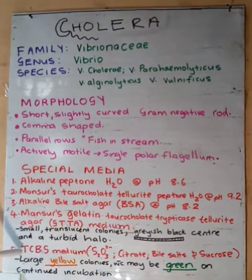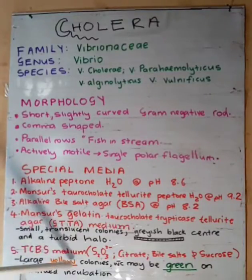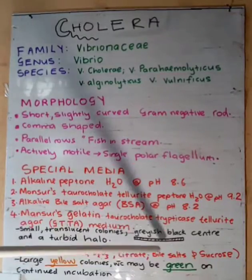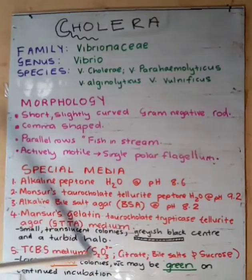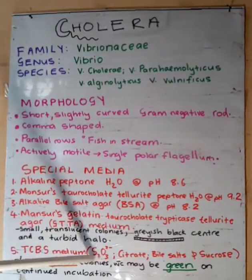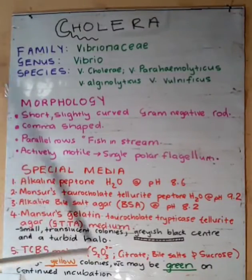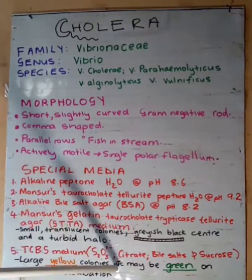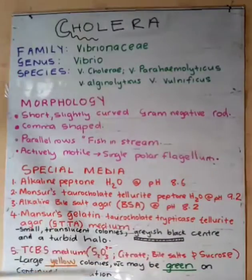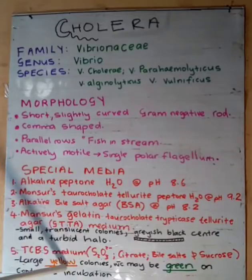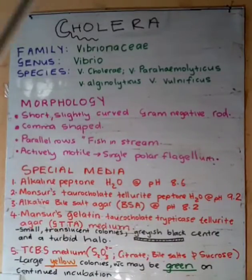On TCBS medium — thiosulfate citrate bile salts sucrose — the bacteria appear as large yellow colonies, which may turn green on continued incubation. Generally they are yellow, but if you continue incubation they will change to green.